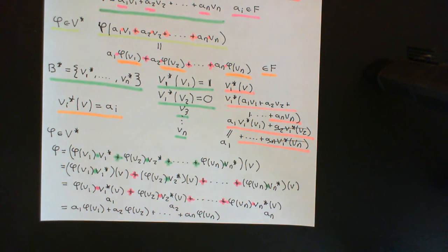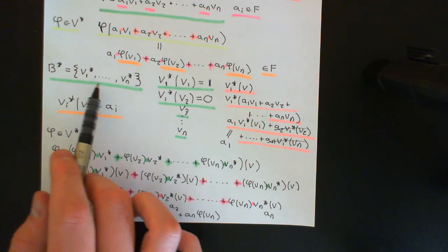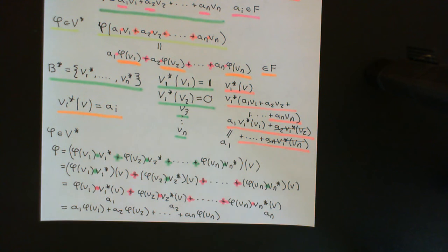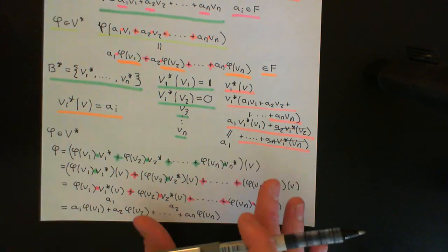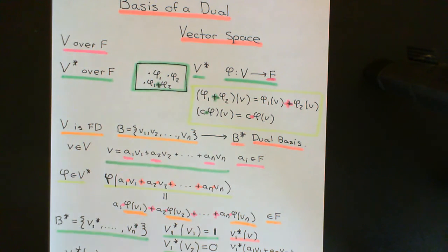The dual vector space we've constructed has the same dimension as the original vector space V. We know that any two finite-dimensional vector spaces over the same field with the same dimension are isomorphic to one another — they're the same algebraic structure up to the symbols used. So V over F and the dual V star over F are isomorphic. This holds in finite-dimensional vector spaces, though not necessarily in infinite-dimensional ones.